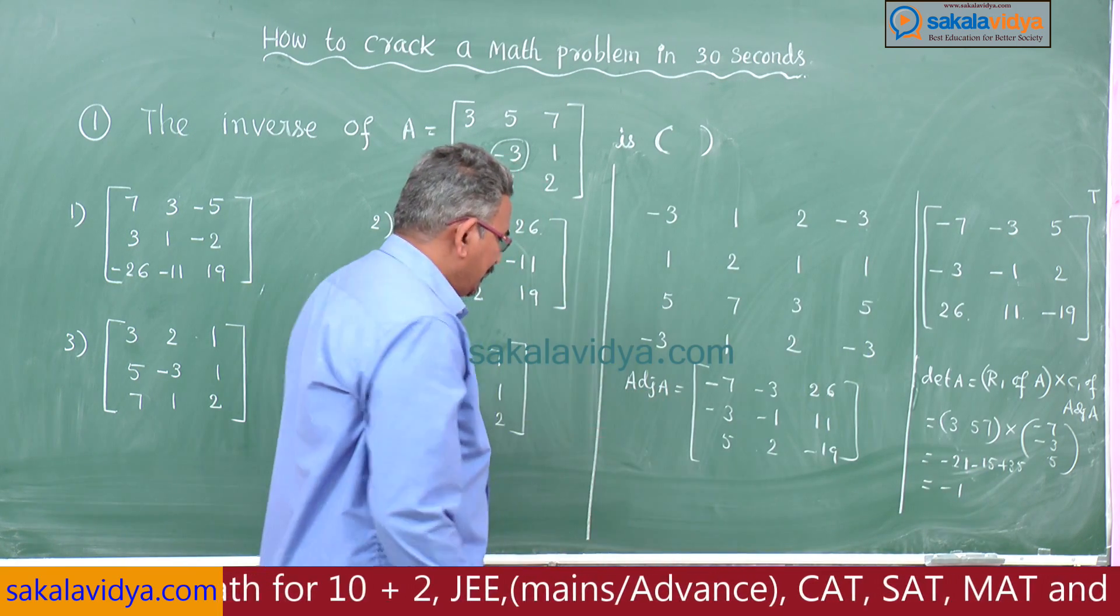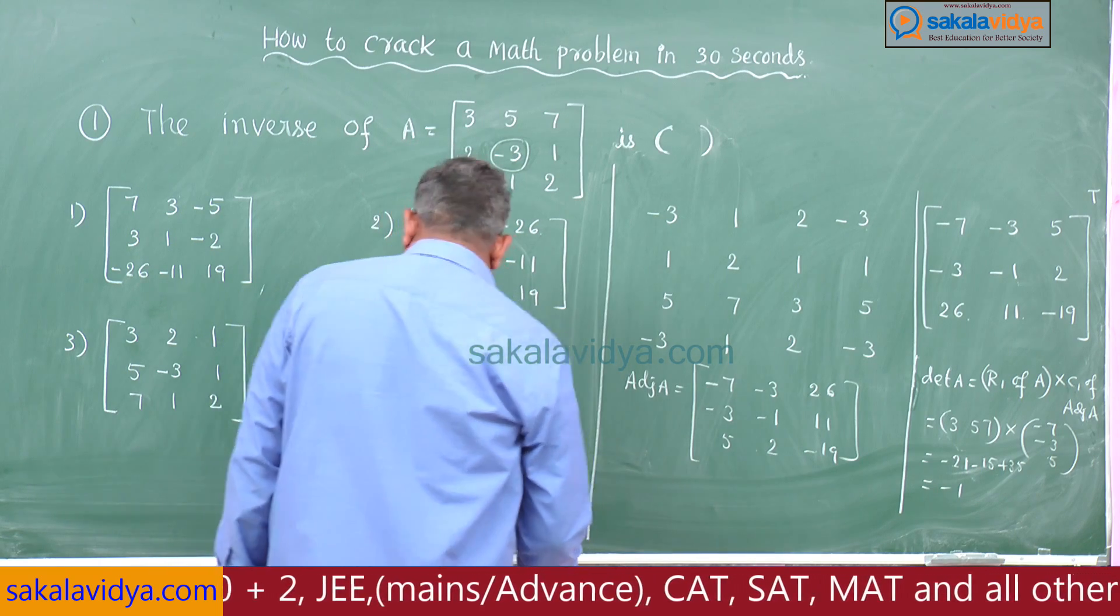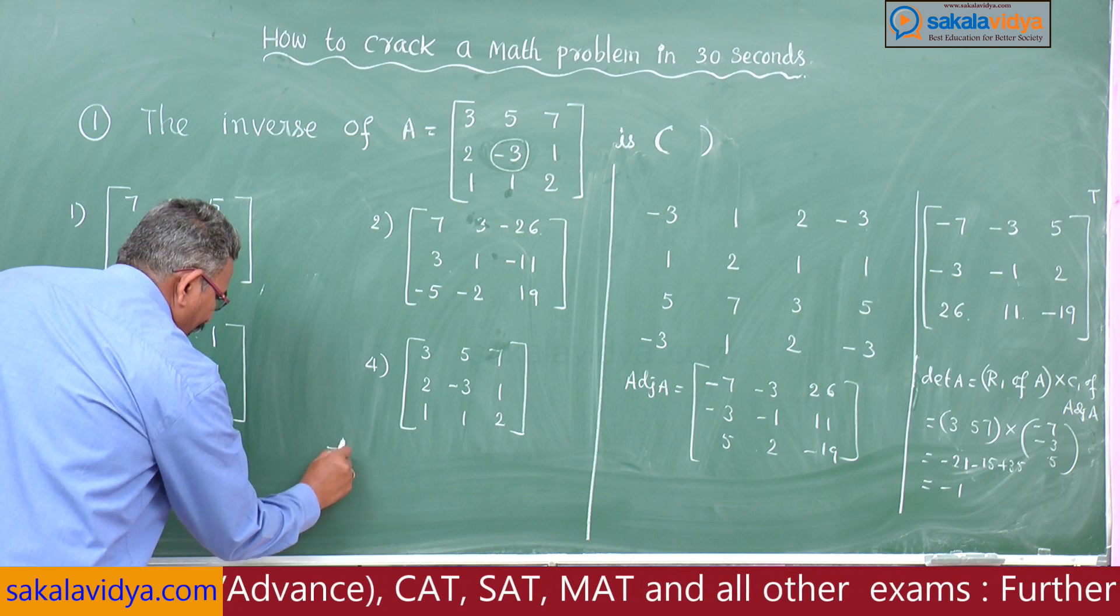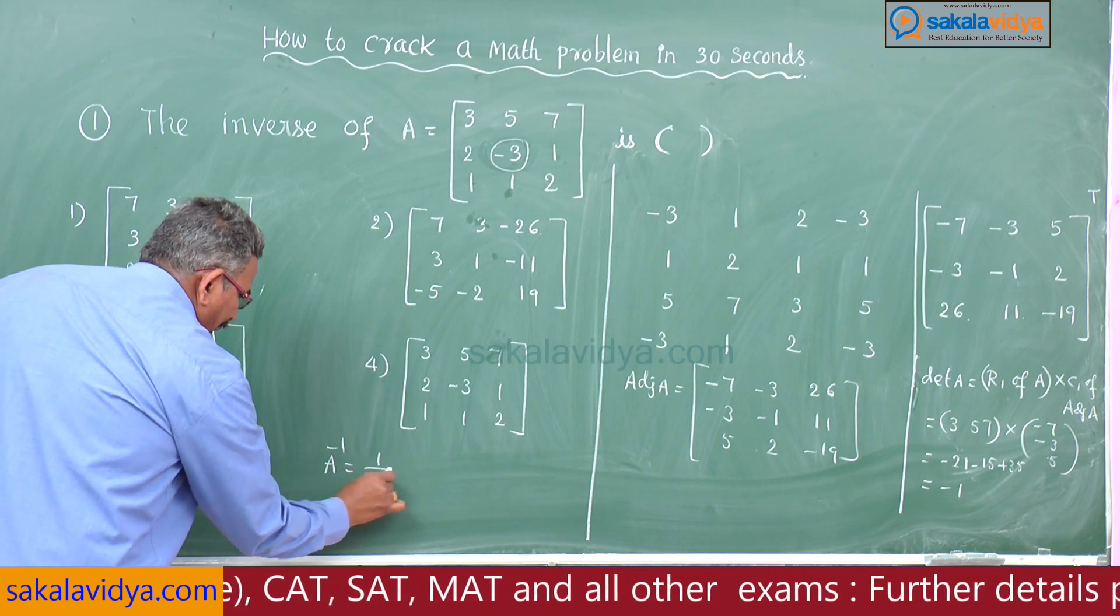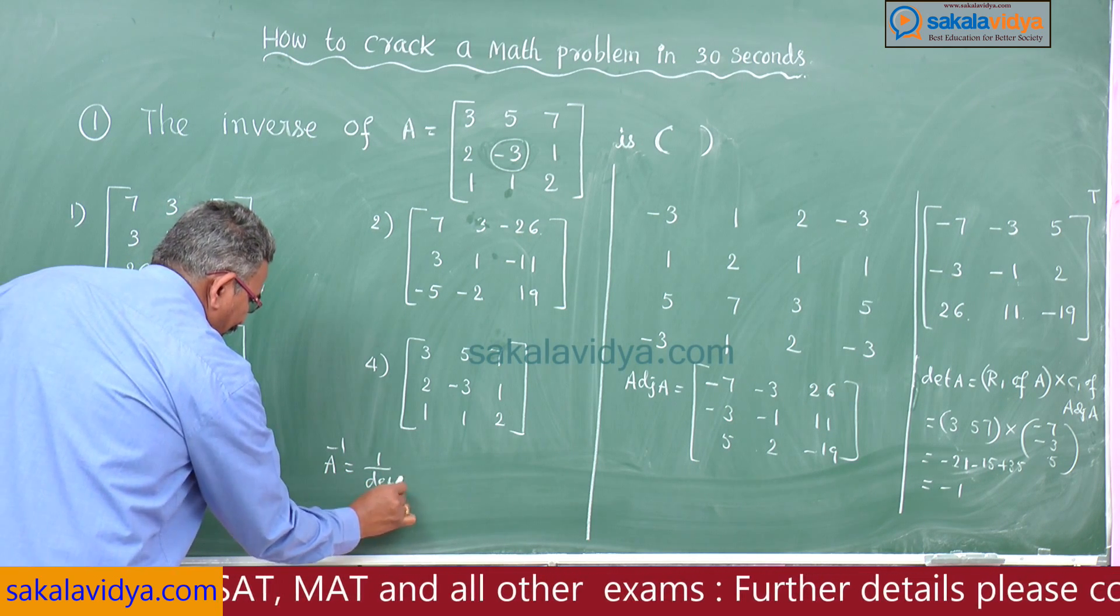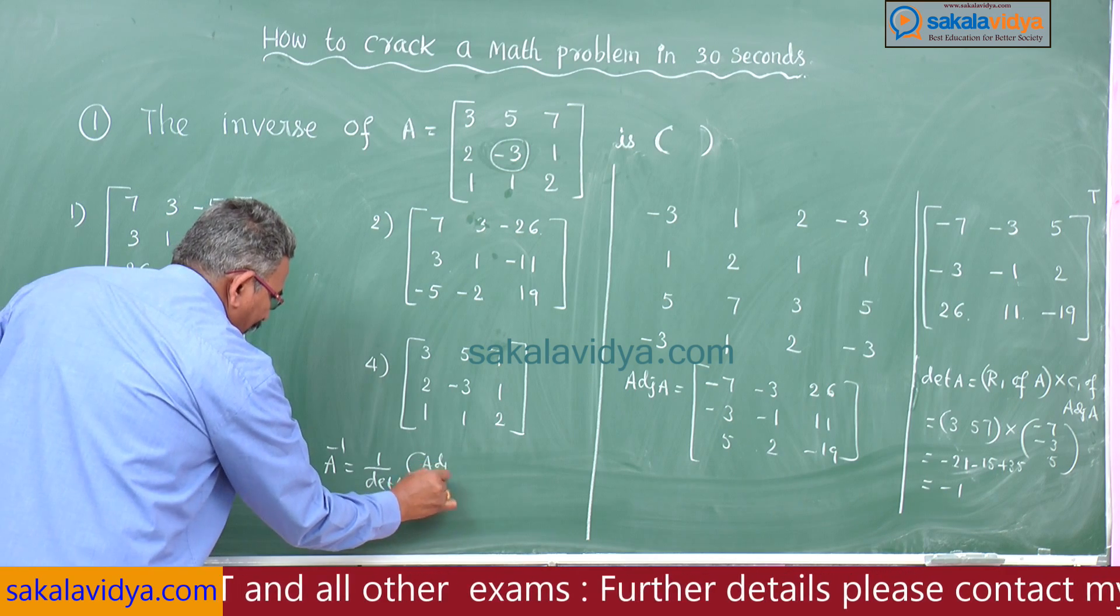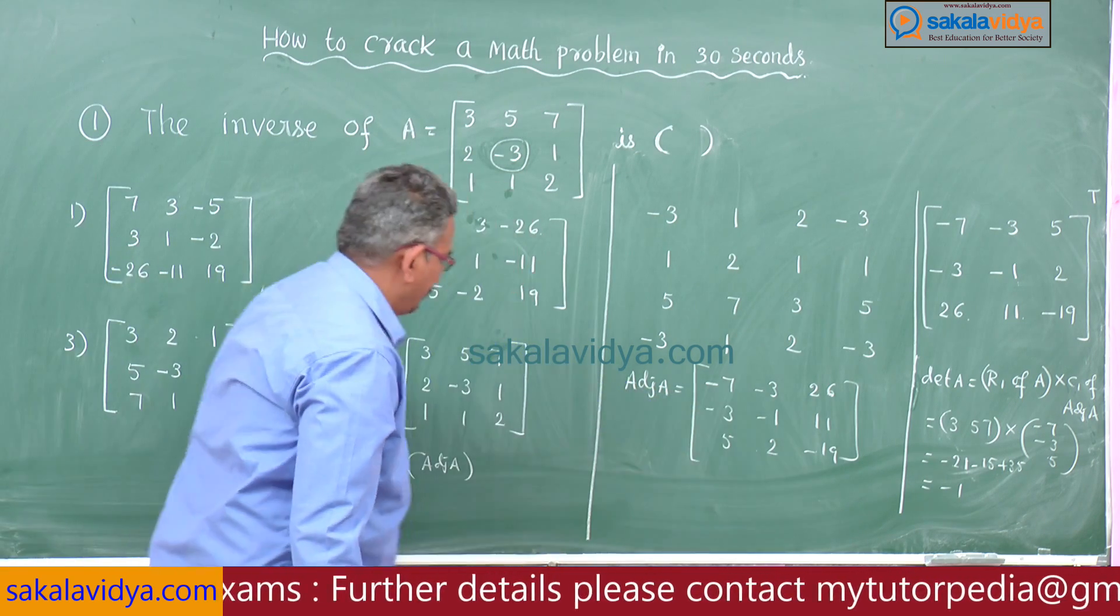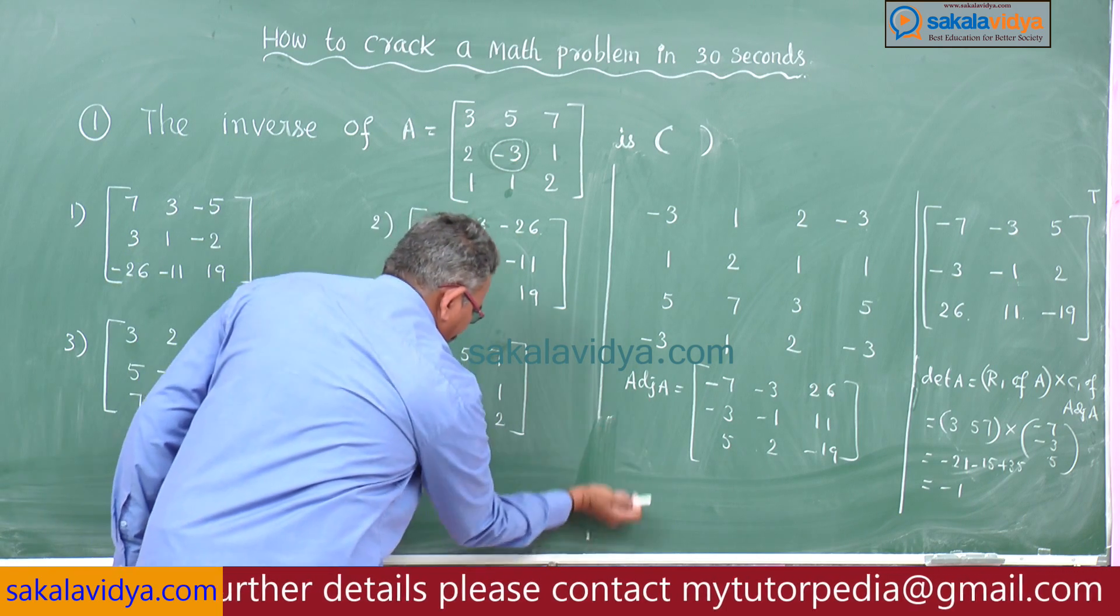So that means A inverse is equal to, I will tell you here, A inverse equals 1 by det A into adj A. That means we have to multiply this one with -1.